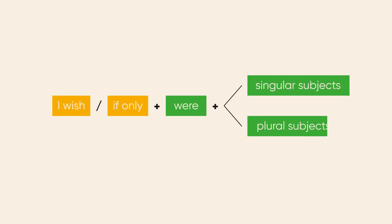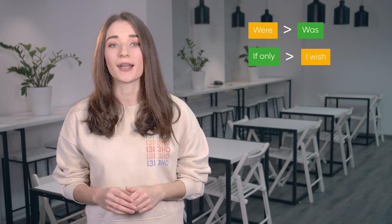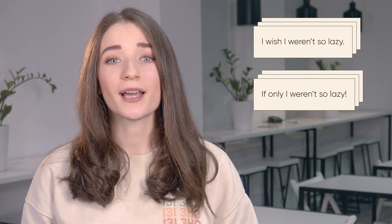So those are the main grammar rules on this topic, but we should talk about a very common question: what should be used — was or were — after if only or I wish? It's more common to use were instead of was after I wish or if only, both with singular and plural subjects. Were sounds more formal than was and has the effect of making a wish even more doubtful. If only is also stronger than I wish. Compare: I wish I weren't so lazy. If only I weren't so lazy. If only you spent more time learning English — I'm sure you'd know it perfectly.